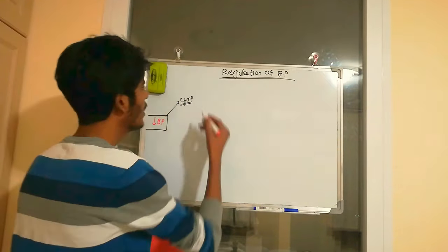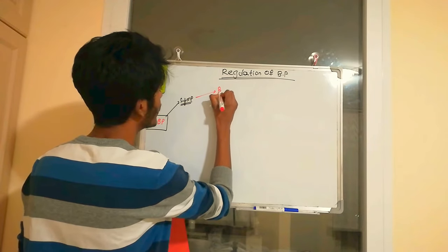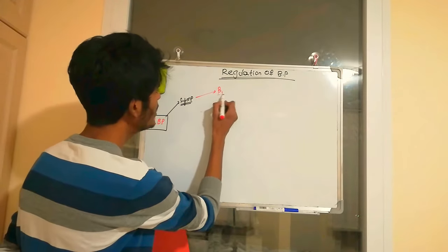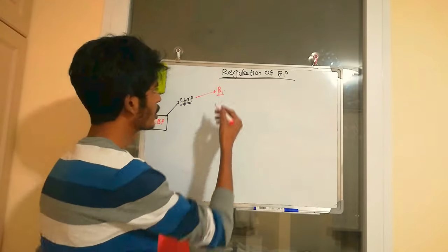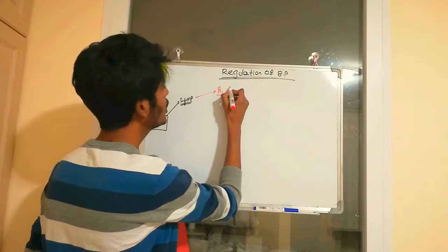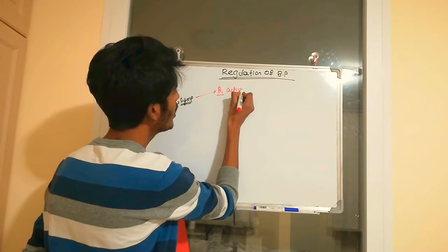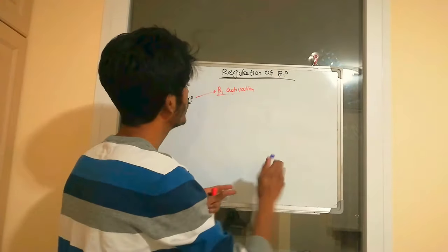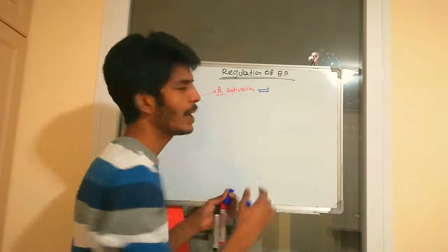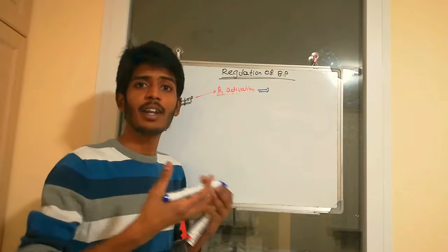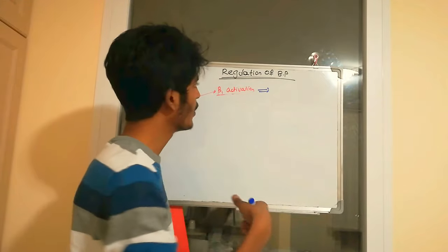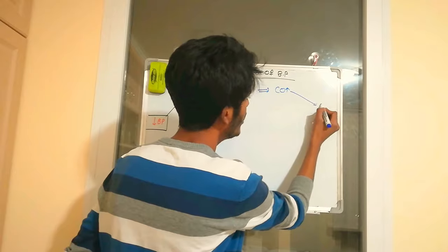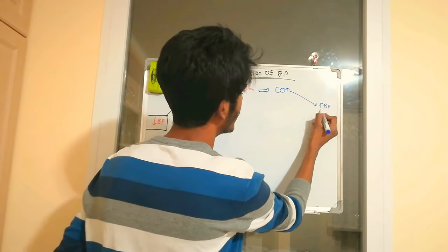When sympathetic activity is activated, it acts through adrenoreceptors — including alpha and beta adrenoreceptors. The beta-1 adrenoreceptors are located in the heart. Activation of beta-1 adrenoreceptors causes the heart to contract more, leading to increased cardiac output, which will automatically increase blood pressure.